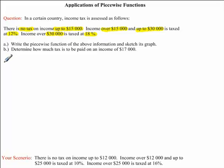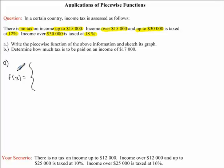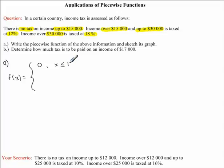Let's begin answering Part A. Let's call our piecewise function f of x, where x will represent our income and f of x will represent the amount of tax. We know when our income is up to $15,000, we have no tax, so f of x is equal to 0. The interval for x is x less than or equal to $15,000 — it's important to include the equal to.